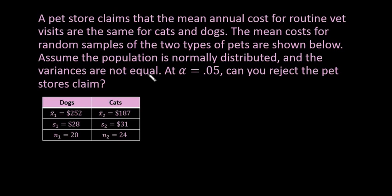All right, so let's read through the problem that we have. A pet store claims that the mean annual cost for routine vet visits are the same for cats and dogs. The mean cost for random samples of the two types of pets are shown below. Assume the population is normally distributed and the variances are not equal. At alpha equals 0.05, can you reject the pet store's claim?